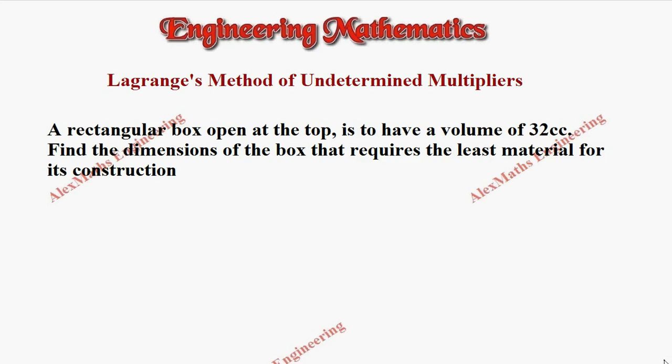Hi students, this is Alex. In this video we are going to solve a problem based on Lagrange's method of undetermined multipliers. The question is: a rectangular box open at the top is to have a volume of 32 cc.